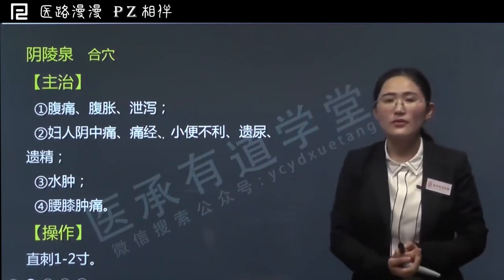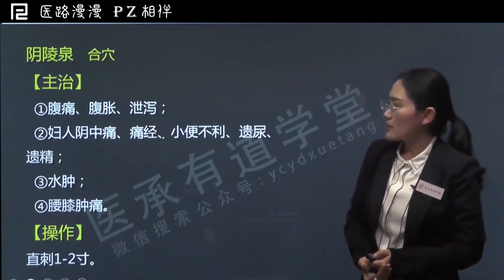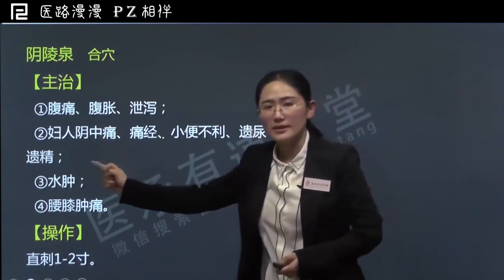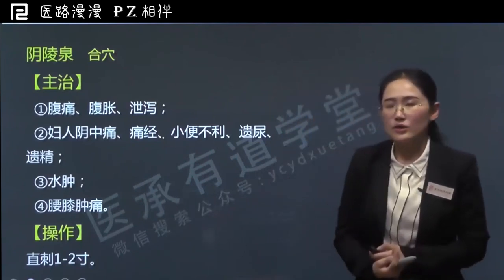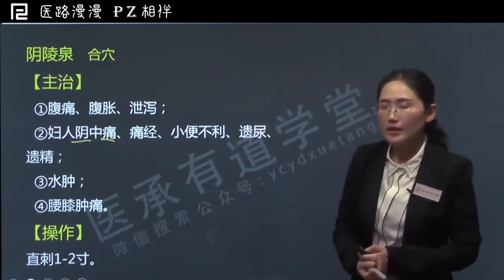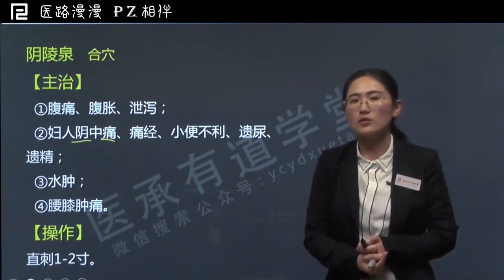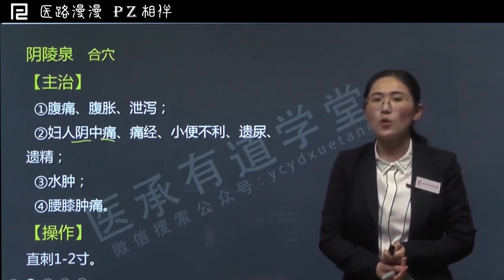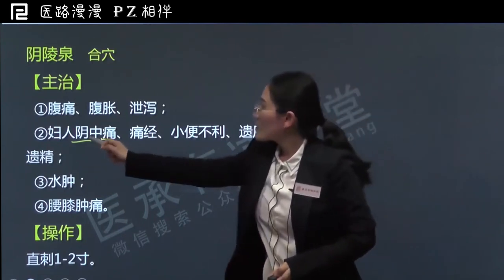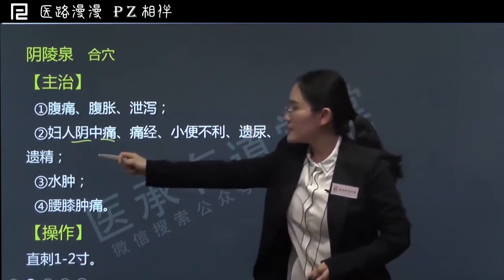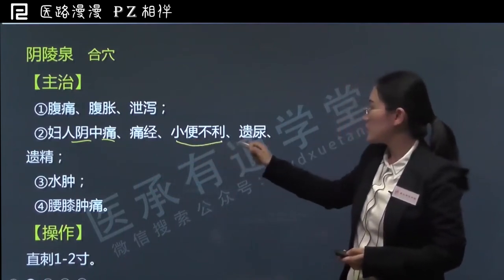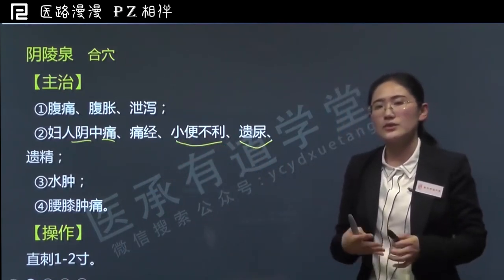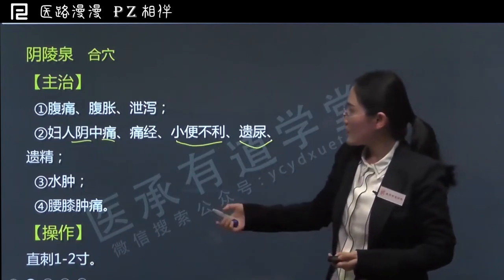比如腹痛、腹胀或者泄泻。阴陵泉还可以治疗妇人阴中痛、痛经、小便不利、遗尿或者遗精。妇人阴中痛一般简称阴痛，指妇女外阴或阴道的疼痛，从现代医学解释常因局部炎症或肿瘤导致。阴陵泉主治的第二大类病症，概括为可治疗一系列生殖或泌尿系统病症。